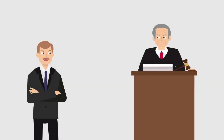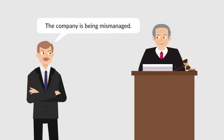Corporate shareholders may initiate a derivative suit if they feel the company is being mismanaged. Some state laws require shareholders to post a bond prior to commencing such actions. Does a federal court need to follow these state laws?